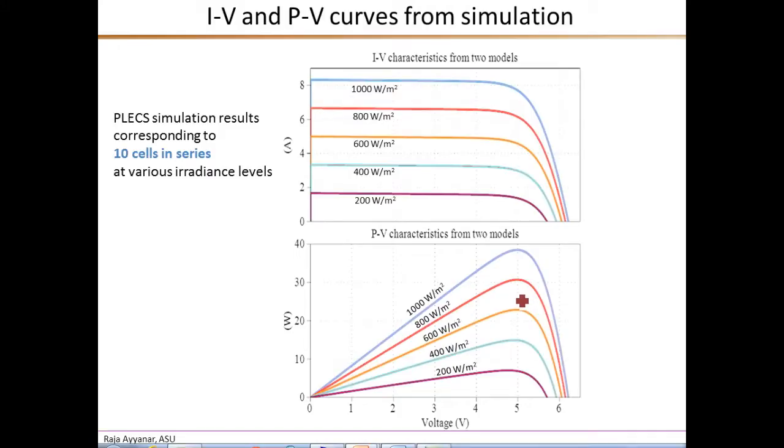Now, to recap some of the things that we have looked at in the previous videos, the current versus voltage characteristics of a PV module looks like the plot at the top. Now this corresponds to five different values of irradiance levels ranging from 1000 watts per meter squared to 200. And this particular module consists of 10 cells in series.